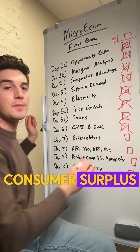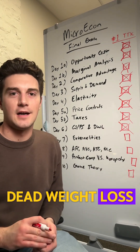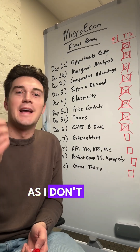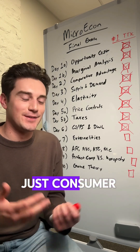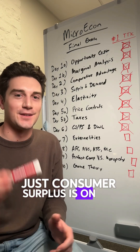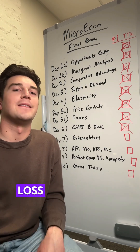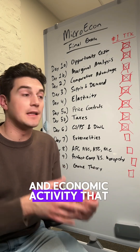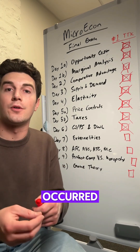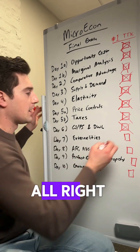Consumer surplus and producer surplus with deadweight loss. I don't have a mega tip here — just that consumer surplus is on the top, producer surplus is on the bottom, and deadweight loss is essentially the loss in economic activity that would have occurred if the government didn't intervene.